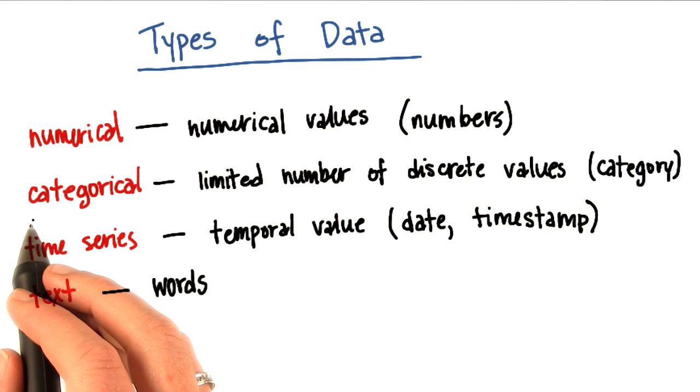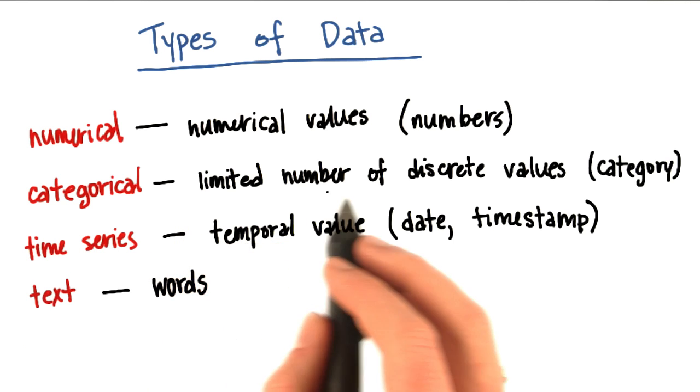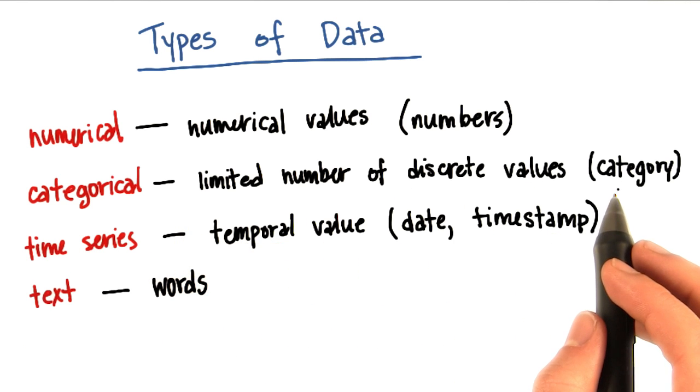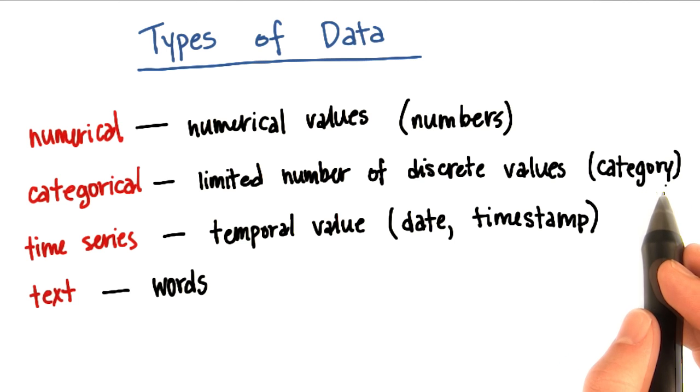Another thing that we've talked a lot about in the context of supervised classification is categorical features. These can take on a limited number of discrete values. So an example of a categorical feature would be the class label.